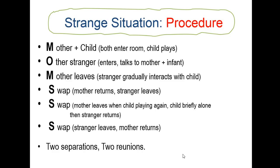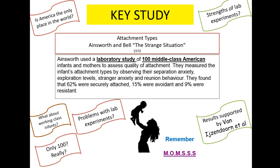Then the mother leaves and the child is left alone with the stranger, who gradually interacts with the child. Then the first swap: the mother returns and the stranger leaves — assessing reunion behaviour. Then there's another swap: the mother leaves while the child is playing, the child is briefly alone, and then the stranger returns — testing separation anxiety and how the baby deals with reunion by another person. Finally, the stranger leaves and the mother returns, again to observe reunion behaviour when the mother comes back.